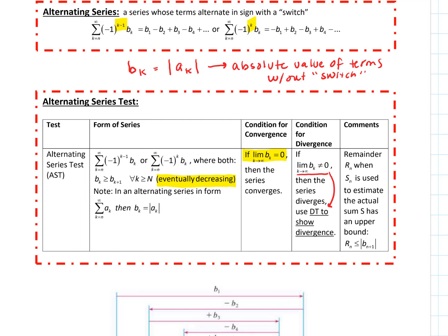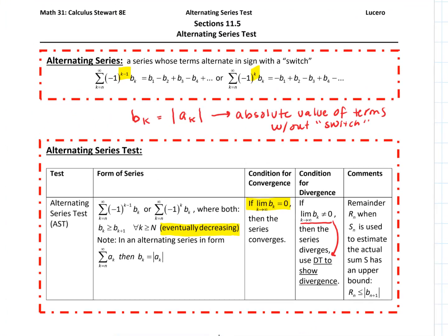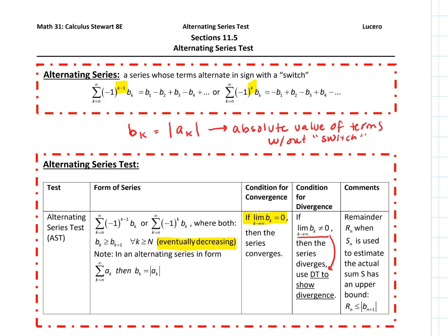We can actually use an estimate here. If we use the first n terms to estimate, we can come up with the remainder — it's a very simple remainder estimation theorem. We'll do that in another video after we've done a couple of examples of the alternating series test.